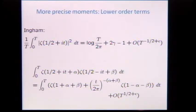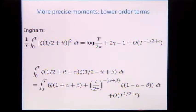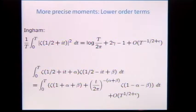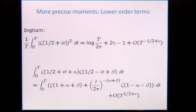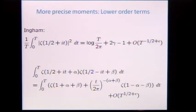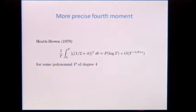We really wanted to figure out all the lower-order terms. There is some history for this: Ingham had lower-order terms for the mean square — it's not just log t, but log(t/2π) + 2γ − 1. He also wrote it with little shifts: ζ(1/2 + it + α)·ζ(1/2 − it + β) equals this formula. This goes back to the 1920s, and putting in little shifts lets us see the symmetries. When you let α and β go to zero on the right side, you recover the formula — each term has a simple pole and the poles cancel.